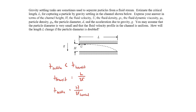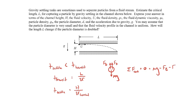To find the terminal speed, we'll draw a free body diagram on the particle. We have weight acting downward, a buoyant force acting upward, and a drag force acting upward on the particle. When summing forces in the vertical direction at terminal speed, the sum of forces equals zero: weight downward, buoyant force upward, drag force upward.